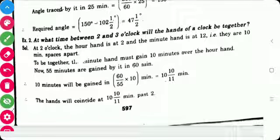Next problem is at what time between 2 and 3 o'clock will the hands of a clock be together? At 2 o'clock the hour hand is at 2 and the minute hand is at 12. So, they are 10 minute spaces apart.